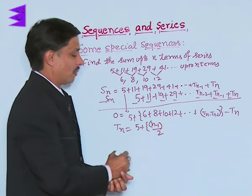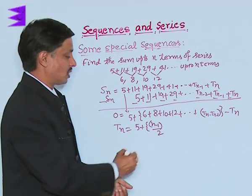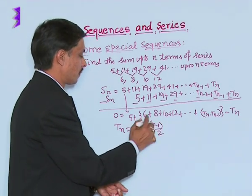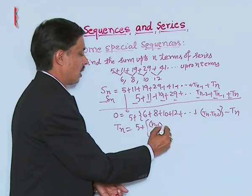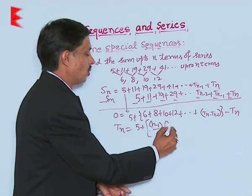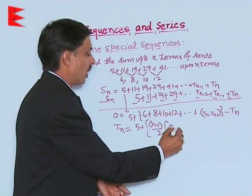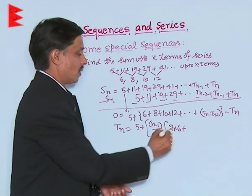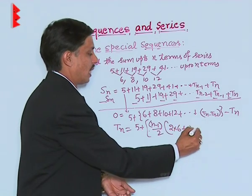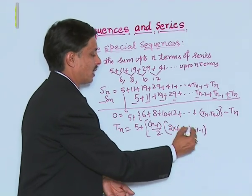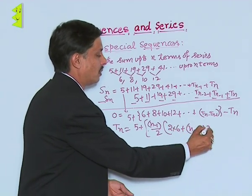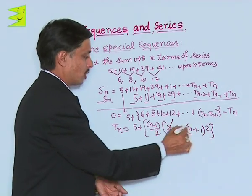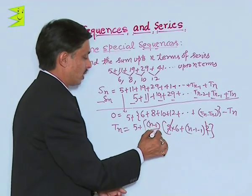The sum of n-1 terms is given by (n-1)/2 × [2A + (n-1-1) × D], which is (n-1)/2 × [2×6 + (n-2) × 2].